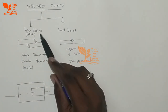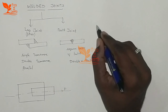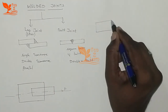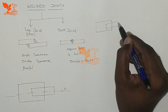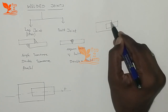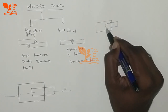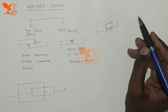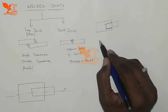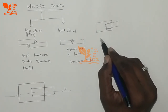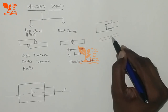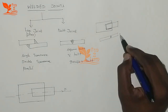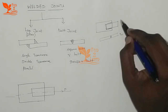A lap joint is formed when two metal components overlap and are welded together. A butt joint is formed by joining two metal surfaces end-to-end and welding them together. So this is the lap joint, and this is the butt joint.